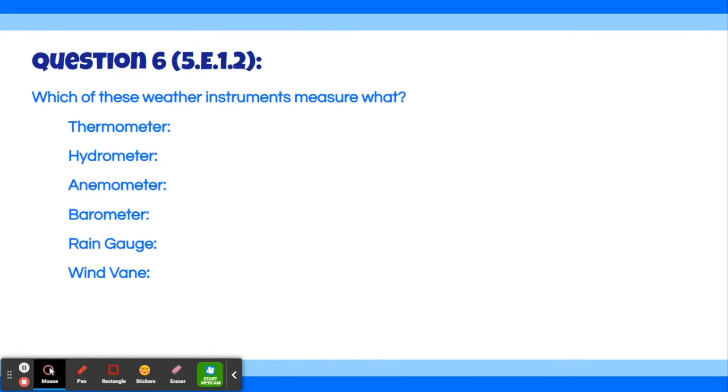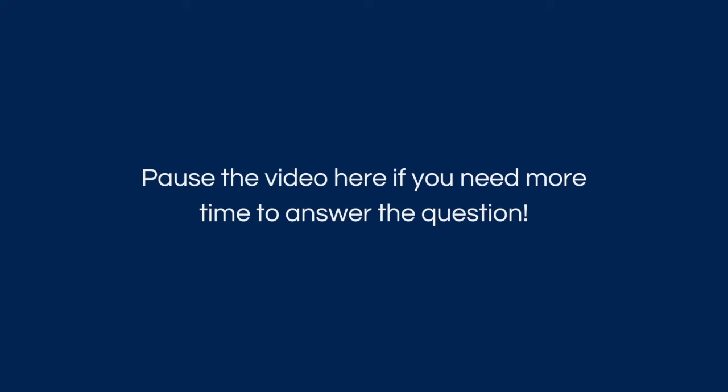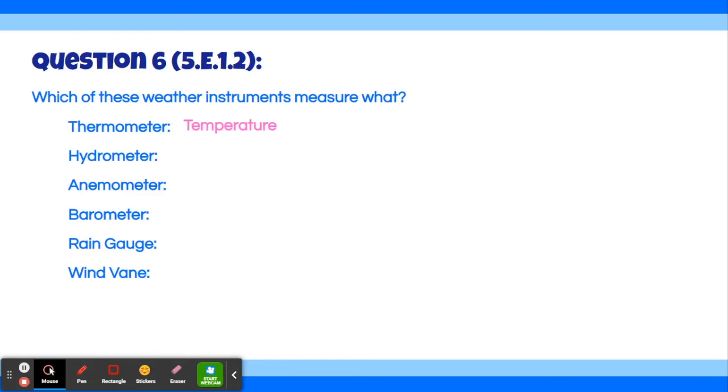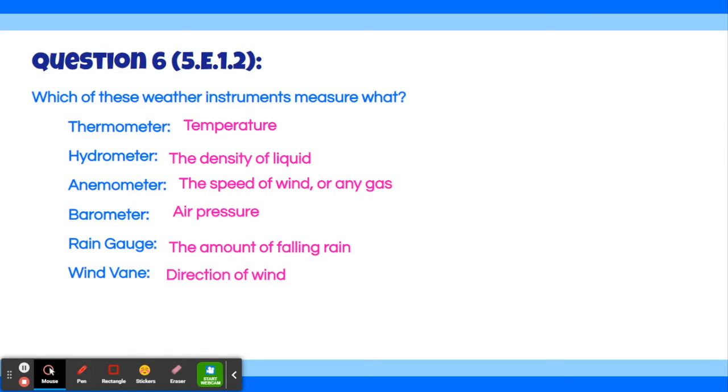Moving on to question number six. Which of these weather instruments measure what? A thermometer measures temperature. A hydrometer measures the density of liquid. An anemometer measures the speed of wind or any other gas. A barometer measures air pressure. A rain gauge measures the amount of falling rain. And a wind vane measures the direction of wind.